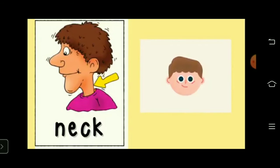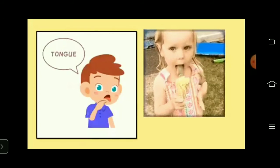We have a neck, which helps us to look here and there and to turn around. We have a tongue which helps us to lick an ice cream. Our tongue also contains different taste buds with which we come to know the different tastes of different foods.